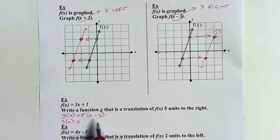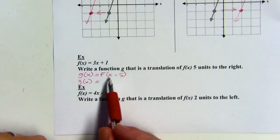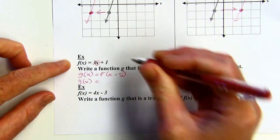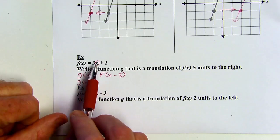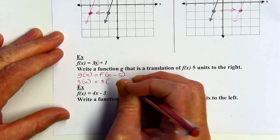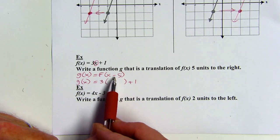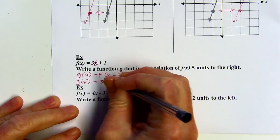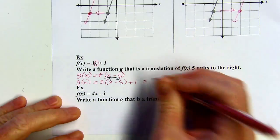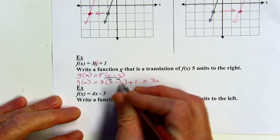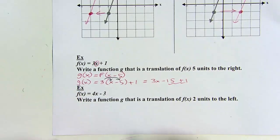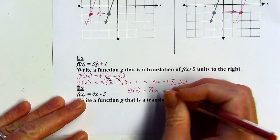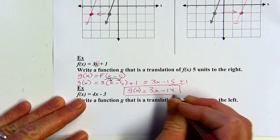Now I'll figure out what f of x minus 5 actually equals. This means I have function f with an input of x minus 5. In the original function the input is x — I'm going to change that input to the quantity x minus 5. So I'm thinking of this as three times something plus one, and that something is going to be x minus 5. I distribute the 3: I get 3x, and three times negative 5 is negative 15, still plus 1. Combining negative 15 plus 1 gives negative 14. So g of x equals 3x minus 14.